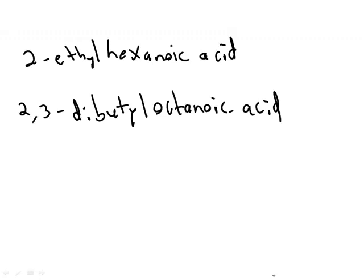The last thing I'll do is name a couple carboxylic acids and then draw the structures. Here are the two names I've conjured up. One of them is two-ethyl hexanoic acid. The other is two, three-dibutyl octanoic acid. Go ahead and pause it and try to write the structure for these.